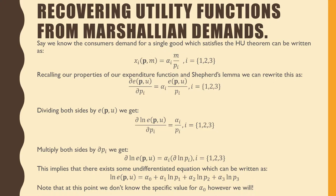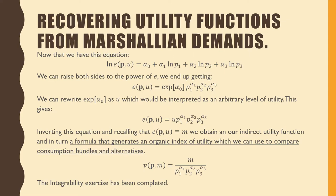What this equation implies, though, is that there exists some undifferentiated equation which can be written as the natural log of our expenditure function is equal to α_0, which is a constant, plus α_i logarithmic of p_i, where i goes from one to three. Note that at this point, we don't know the specific value for α_0. However, we will know it.